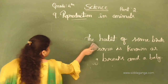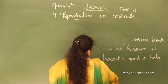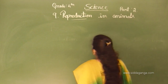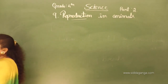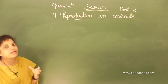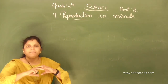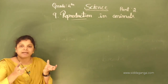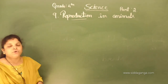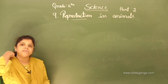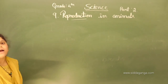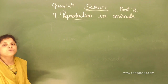Birds are going to lay eggs in the nest. After laying eggs, they go through the process of incubation — the habit of keeping eggs warm. After incubation, the egg shell breaks down, or hatches, and the baby bird comes out.